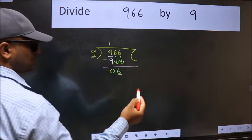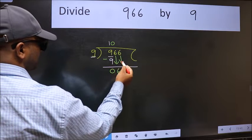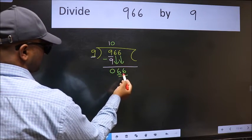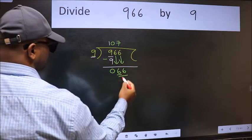And the rule to bring down second number is we should put 0 here. Then only we can bring this number down. Now 66. A number close to 66 in 9 table is 9 sevens 63.